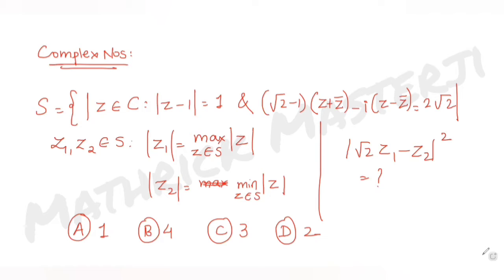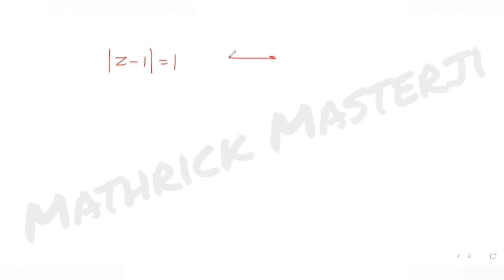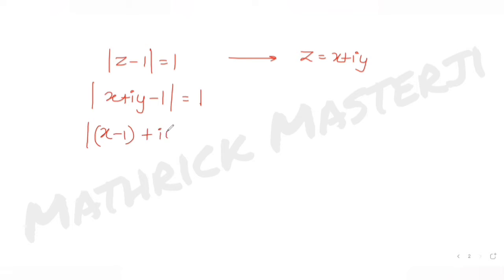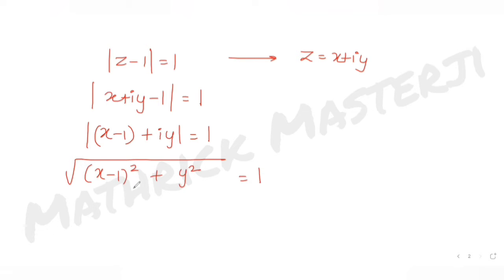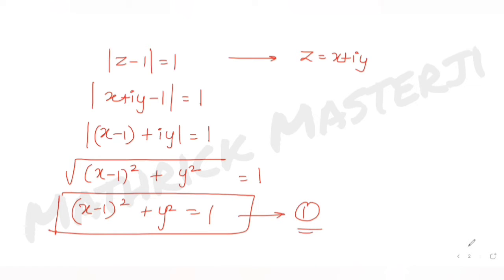For the first condition, z belongs to complex numbers with |z - 1| = 1. Writing z = x + iy, we get |x - 1 + iy| = 1, which gives √[(x-1)² + y²] = 1. Squaring both sides, we get our first equation: (x - 1)² + y² = 1.